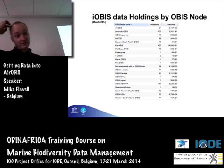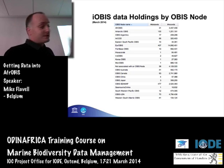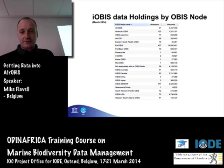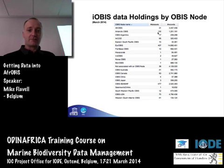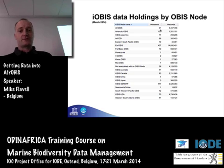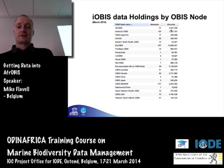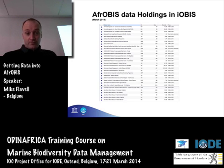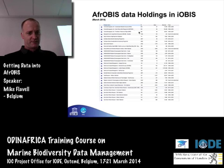Just a quick note on the nodes: Afro-OBIS is at the top. This tells you by all the different nodes the number of datasets and number of records. At the moment, we've got 31 datasets from Afro-OBIS, and that's just under 3.5 million records as a whole. You can find all of this already on iOBIS — there's a list of the 31 datasets from various places.